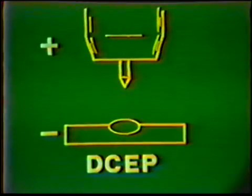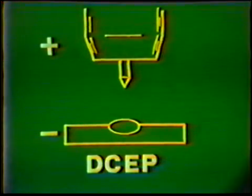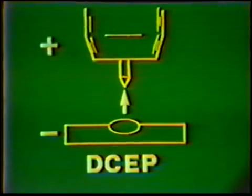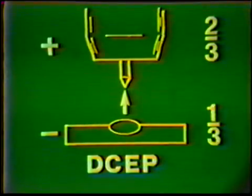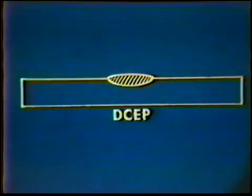With direct current electrode positive, the electrode becomes positive while the work lead becomes negative. This causes the electrons to flow from the work to the electrode. This puts two-thirds of the heat on the electrode and one-third on the work. The resulting weld is wide, with shallow penetration.